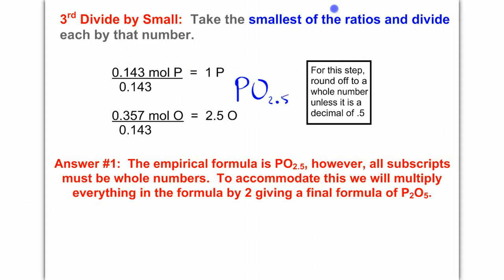To deal with that, I want to multiply the whole thing times 2, and that's going to give me P2O5. This is what you have to do to get rid of your little half, the 2.5. So for your answer, and this is your answer for number one, we actually don't leave the empirical formula with a half. We have to end up with all whole numbers. The empirical formula is P2O5.